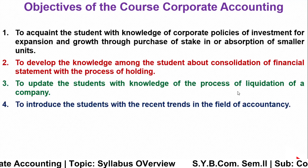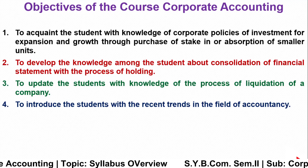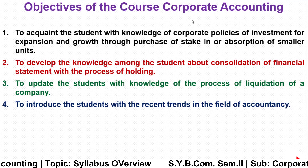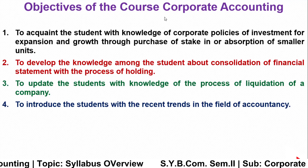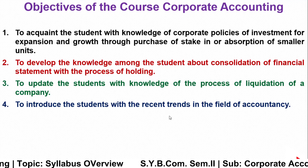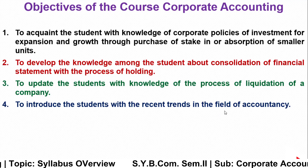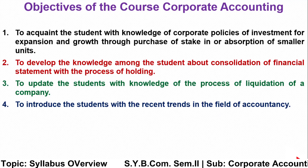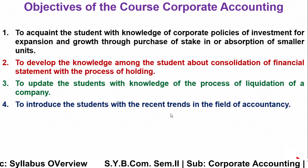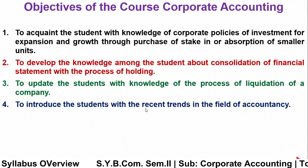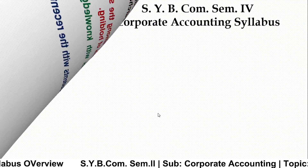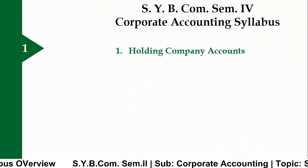The last objective is to introduce students to recent trends in the field of accountancy. In corporate accounting, we have to study various kinds of trends to cope with new technologies and developments in the market. For that purpose, the fourth chapter — Forensic Accounting — is introduced as a recent trend.